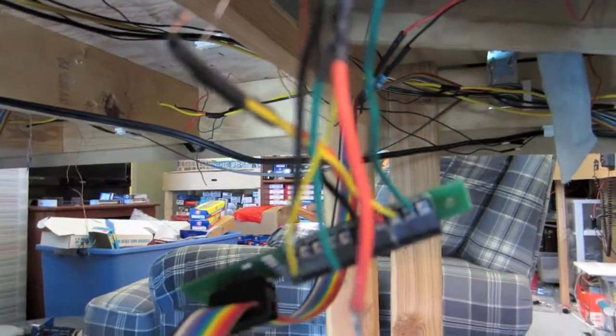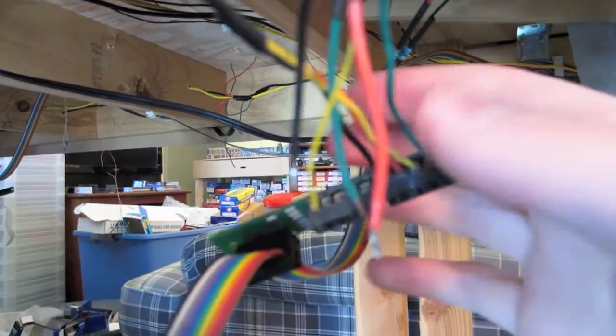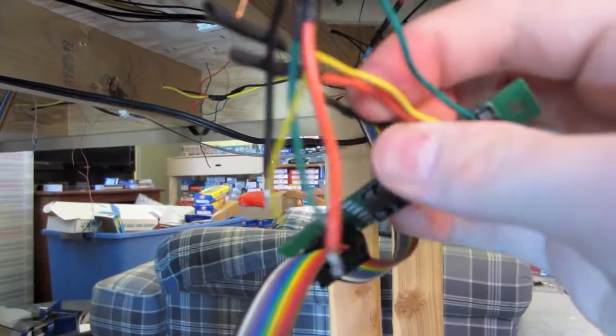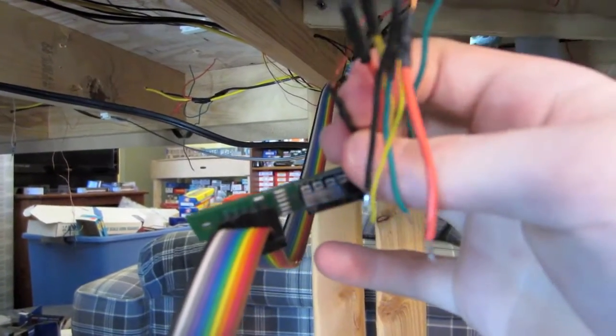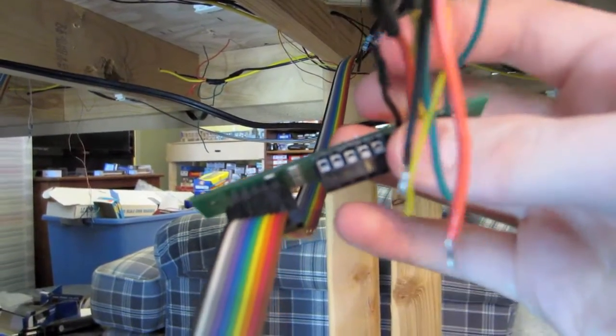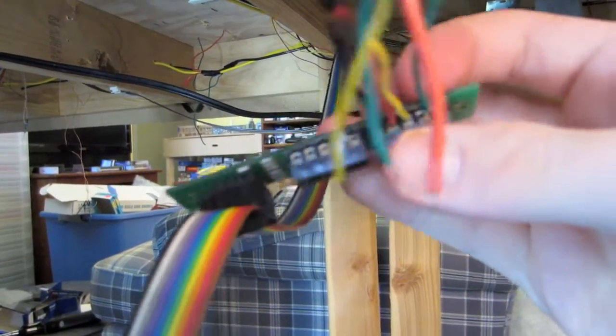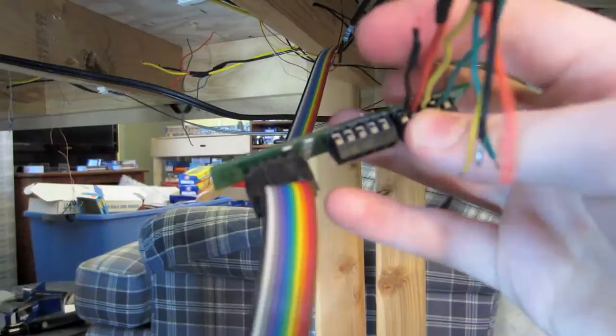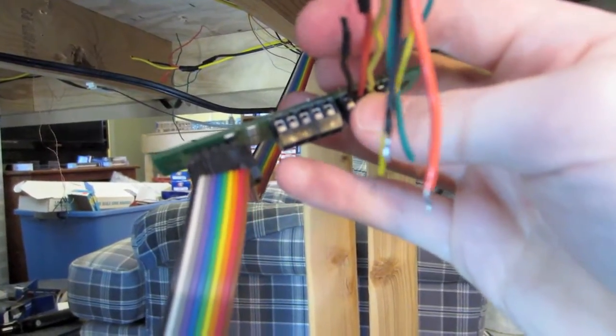And the order I do that is, like you saw, first I solder on the black, which is the common, and then I put heat shrink tubing over it, test the connection, see if a light lights up. If it does, I'll go ahead and shrink the heat shrink tubing.